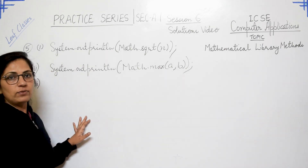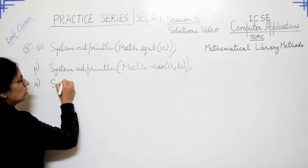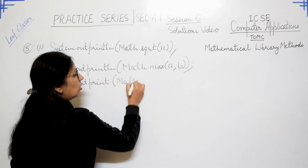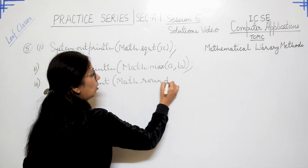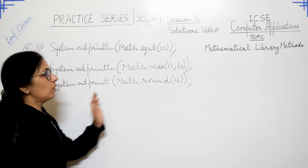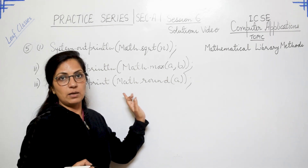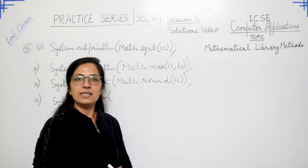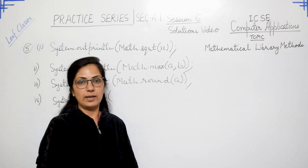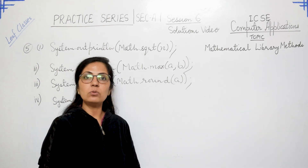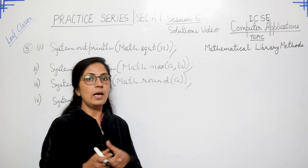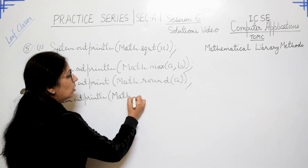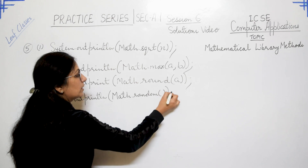Part three: to display the rounded value of the given number A. Use: System.out.print(Math.round(A)) or println — both are correct. Always take care of opening and closing brackets — two opening brackets require two closing brackets. Part four: to display the random number between 0 and 1. We know Math.random() generates a random value between 0 and 1 only. So write: System.out.println(Math.random()). We never give any argument to the random function.